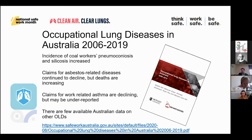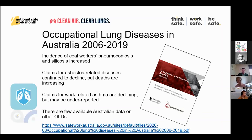Its main conclusions are on the slide: the incidence of coal workers' pneumoconiosis and silicosis is increasing. Claims for asbestos-related diseases continue to decline, but unfortunately deaths are increasing. Claims for work-related asthma appear to be declining, but there's evidence internationally that suggests these may be underreported. In general, there are really few available data within Australia on other occupational lung diseases.